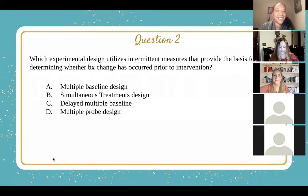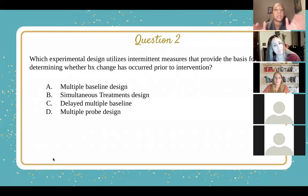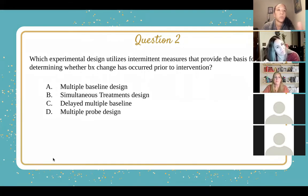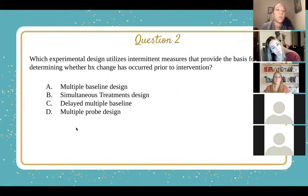The answer here is D, multiple probe design. A multiple probe design essentially makes sure that you're checking to see if the child had learned the skill during the baseline, because sometimes you have warm-up effects or the child just matures. So a multiple probe design is going to be your answer here.